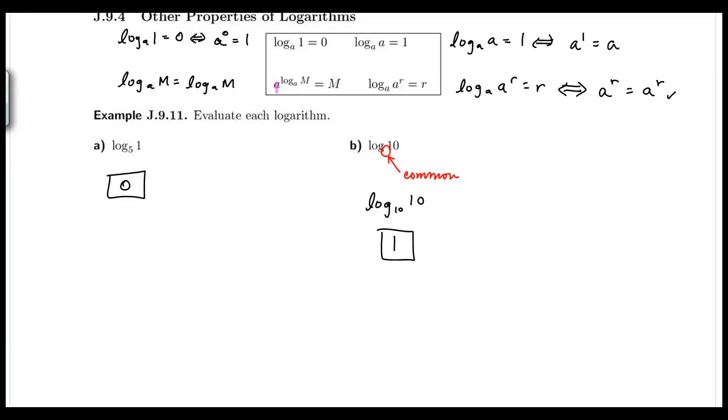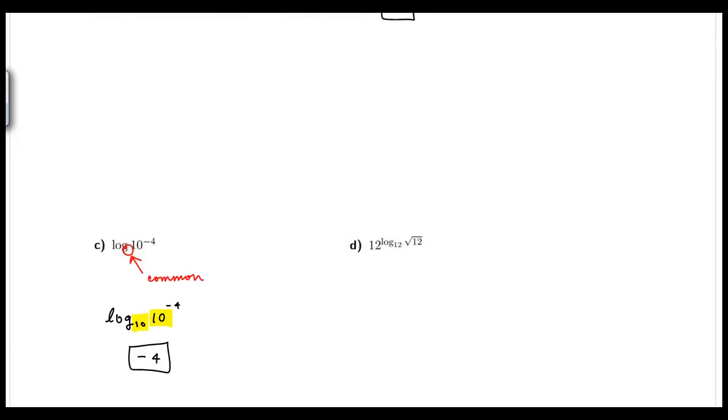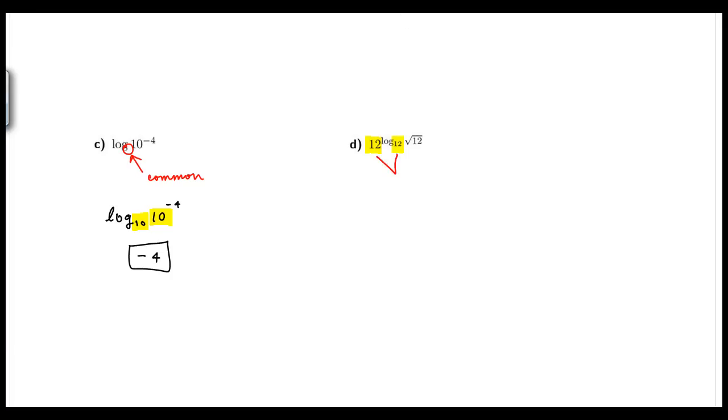So what this means is, is that if I have a value 12 to an exponent with a log with that same value, then it's just going to be whatever the value the log is attached to. So a to the log base a of m, in our case it's 12 log base 12 of square root of 12. Notice it's just going to be the value. So notice that 12 to the log base 12, these two match. So it's just going to be the square root of 12.